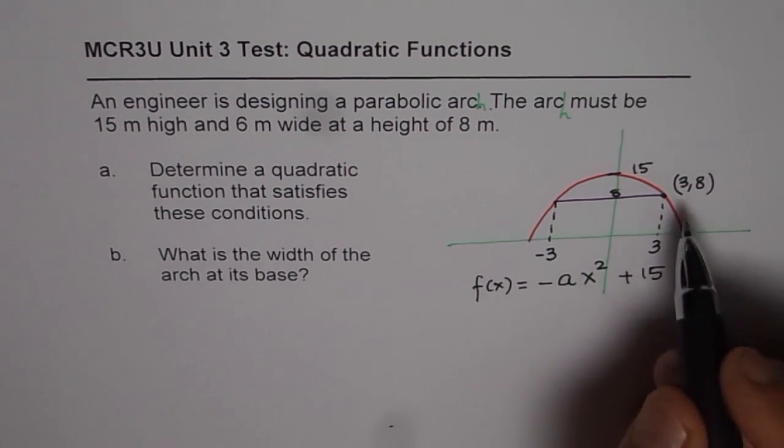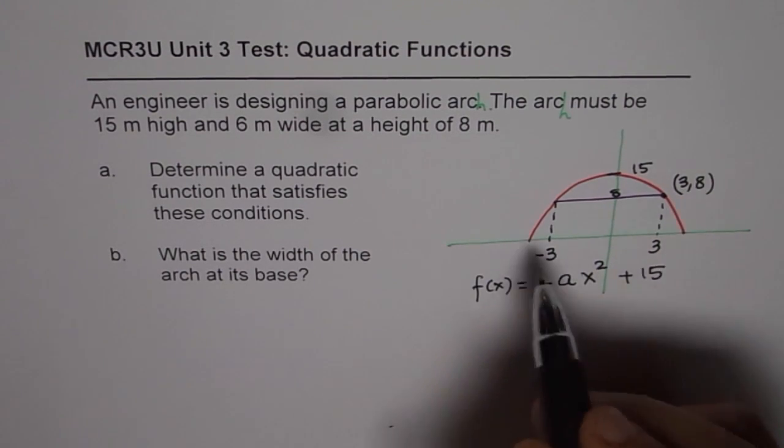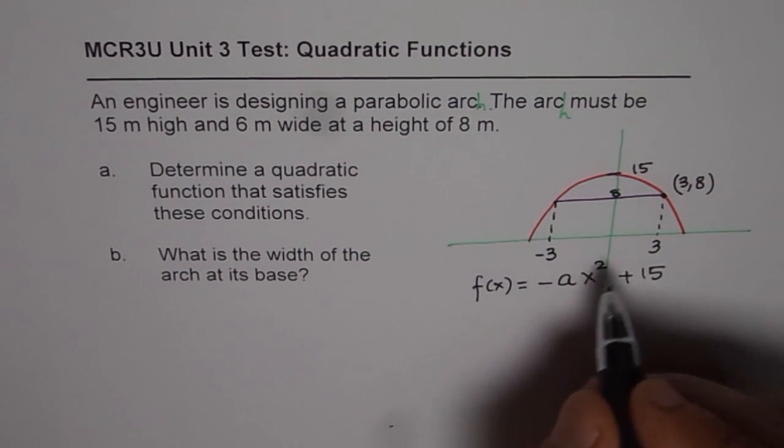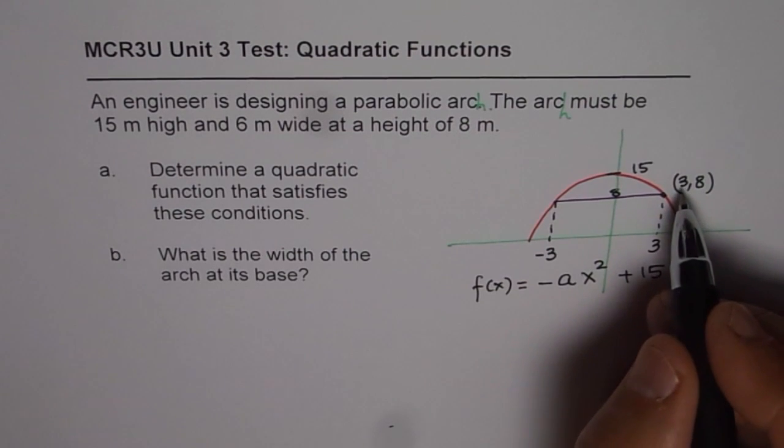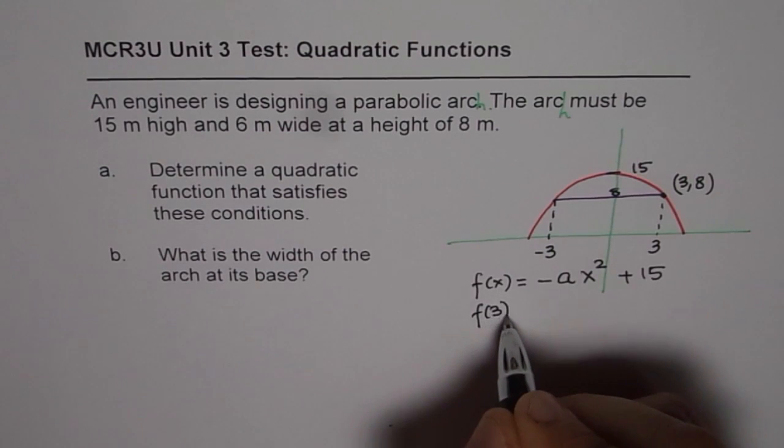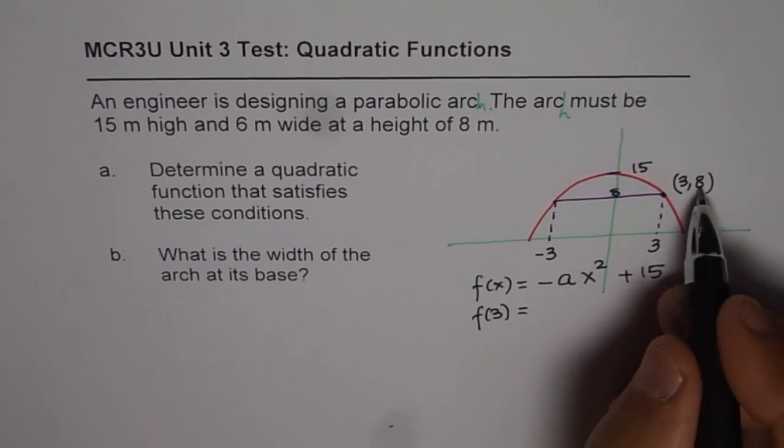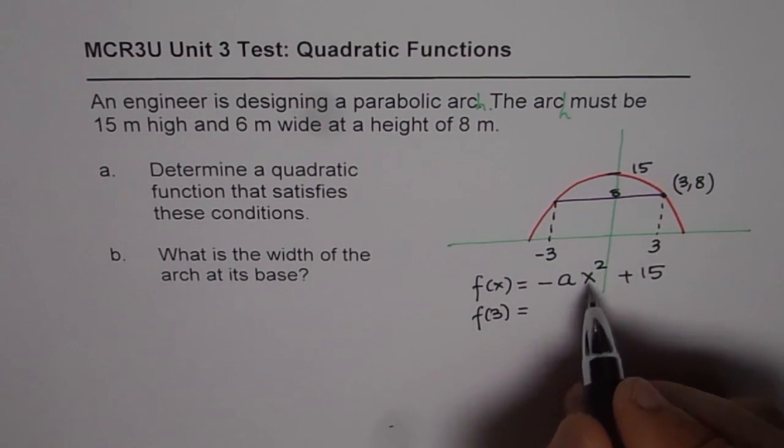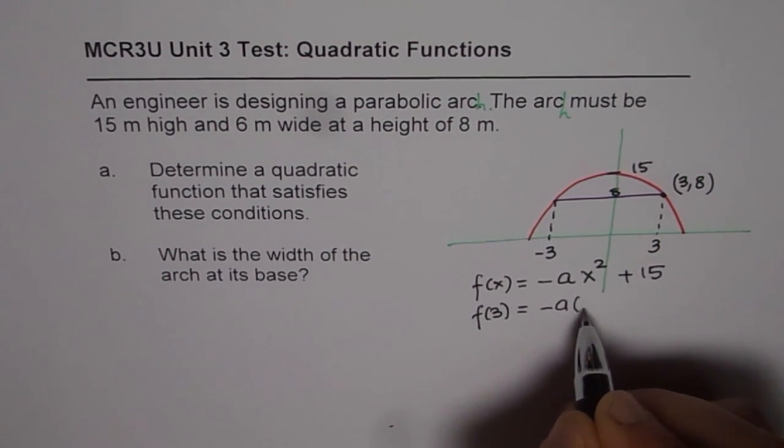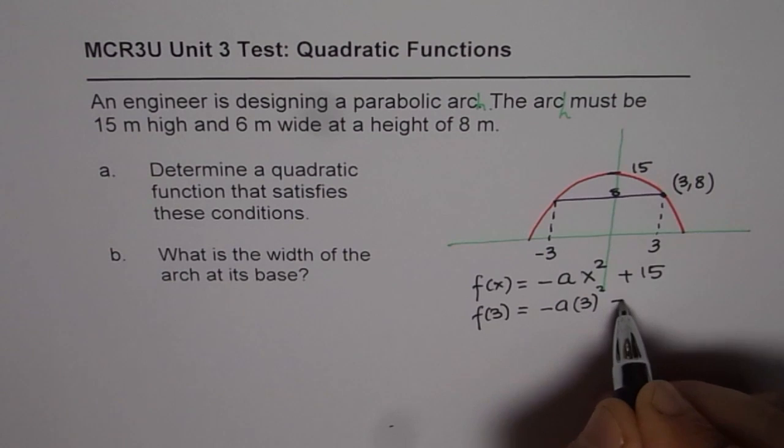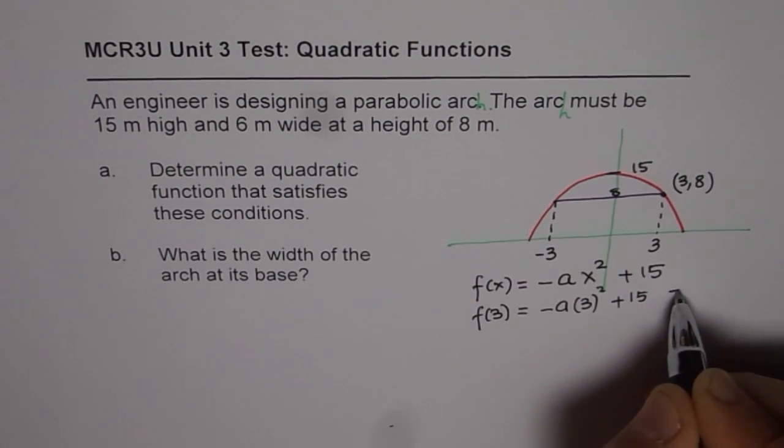To find a, we can use point (3,8) or even (-3,8). So let's use (3,8). That means when x is 3, f(3) is 8. So we will substitute 3 here. So -a(3)² + 15 should be equal to 8. That is what it means.